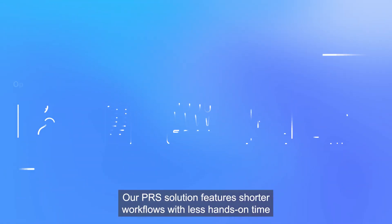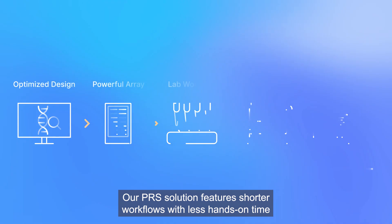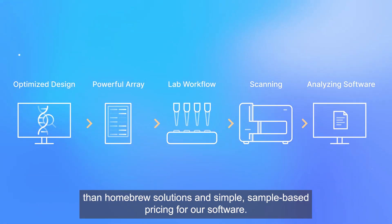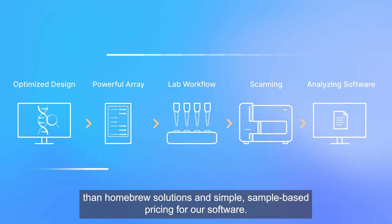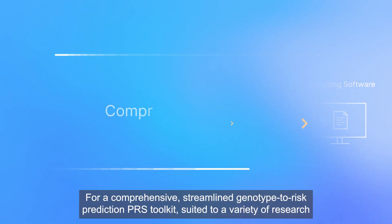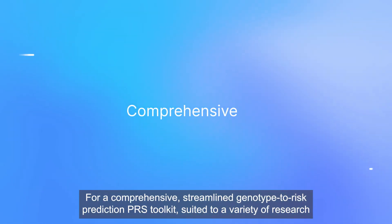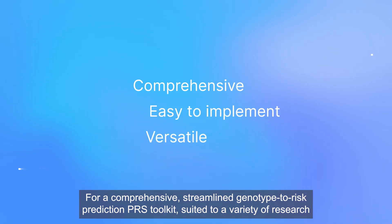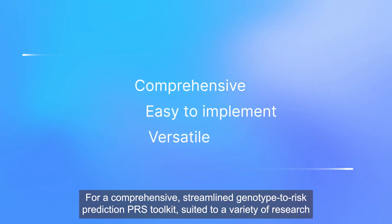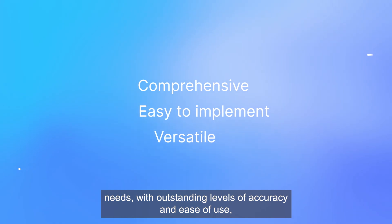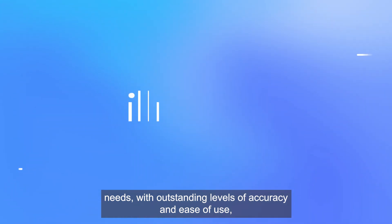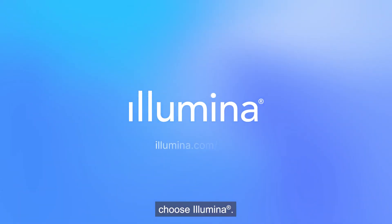Our PRS solution features shorter workflows with less hands-on time than homebrew solutions, and simple sample-based pricing for our software. For a comprehensive, streamlined, genotype-to-risk prediction PRS toolkit, suited to a variety of research needs, with outstanding levels of accuracy and ease of use, choose Illumina.